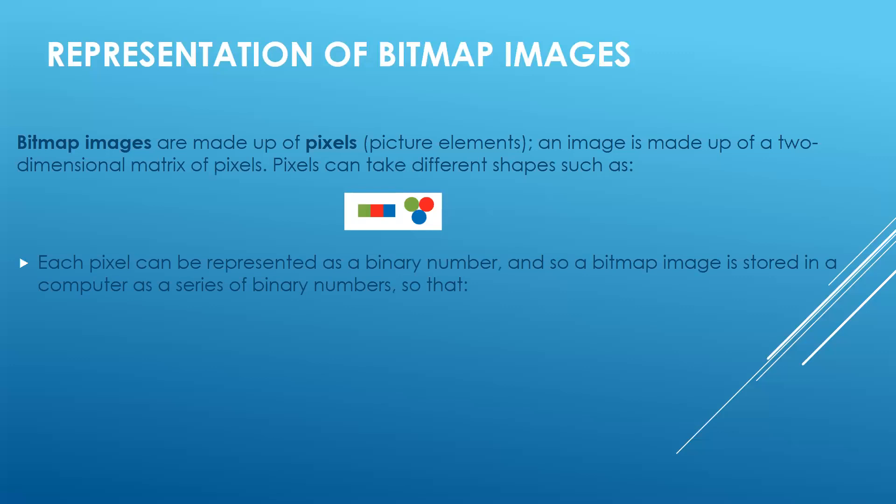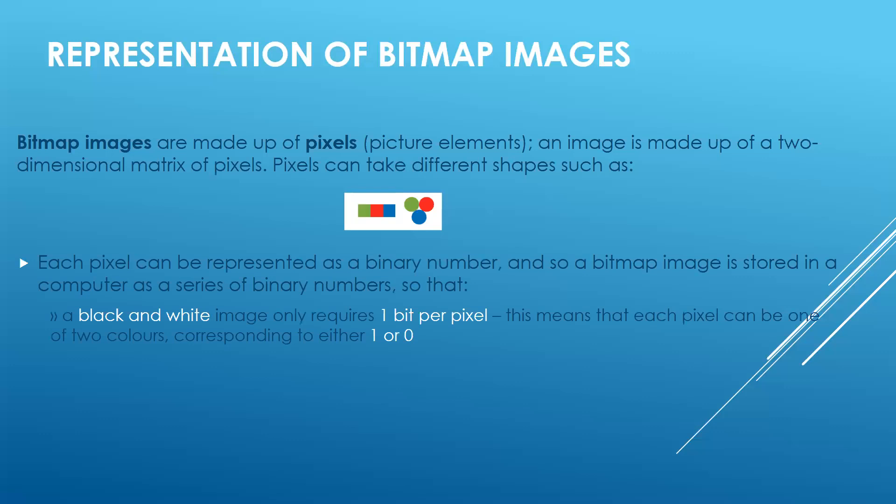Each pixel is represented as a binary value, so a bitmap image stored in a computer is basically a combination of binary values. If your picture is a black and white image, it will require only one bit per pixel. The pixel will either be black or white, so one bit stores either a value of one or zero — no third value is possible.